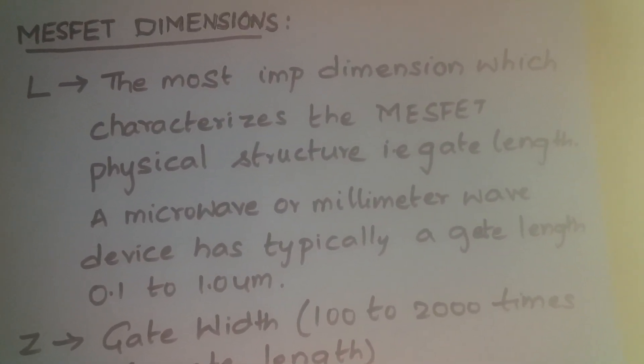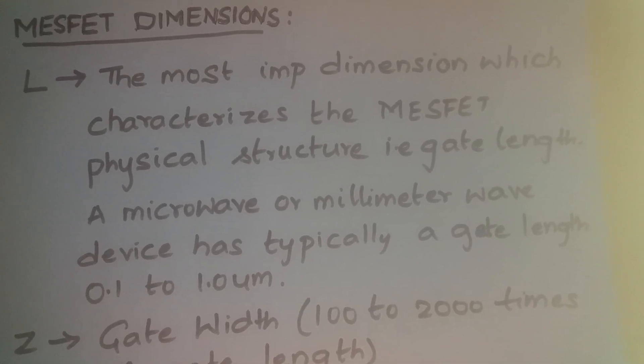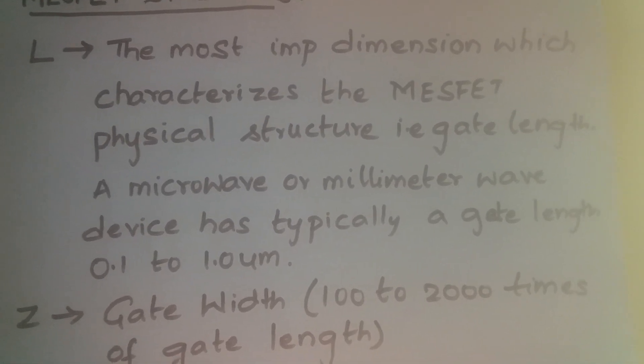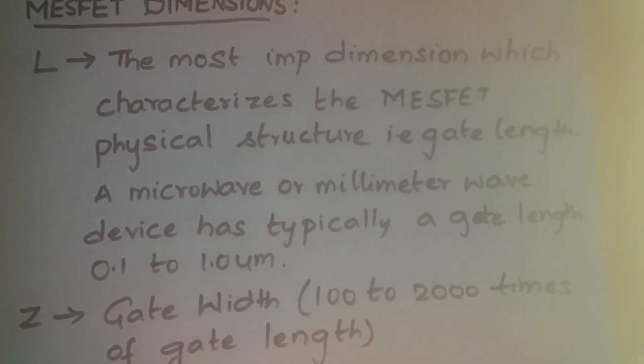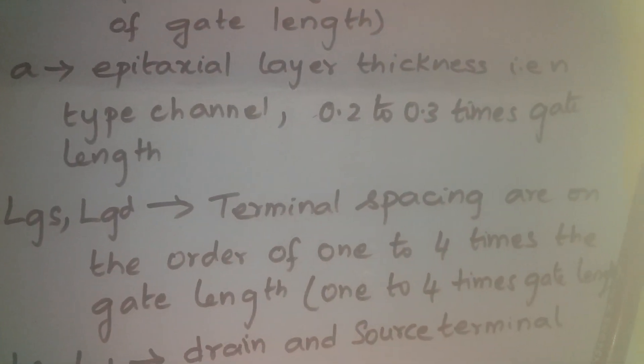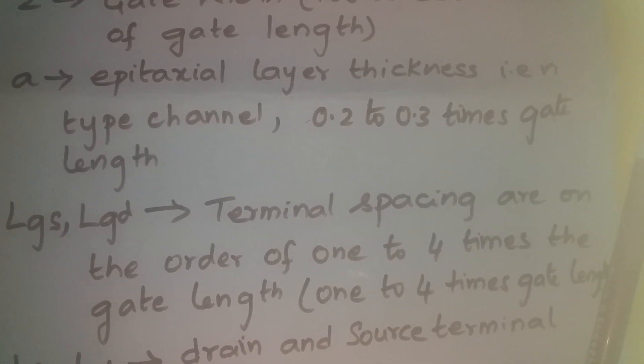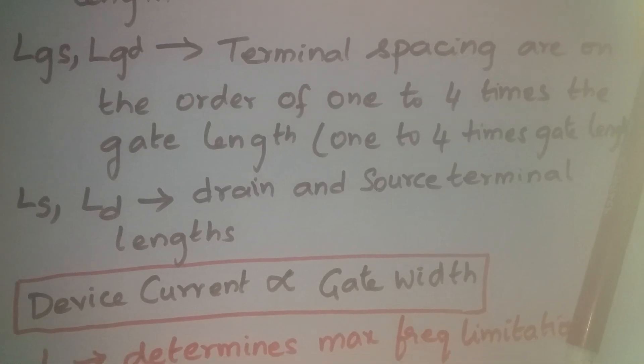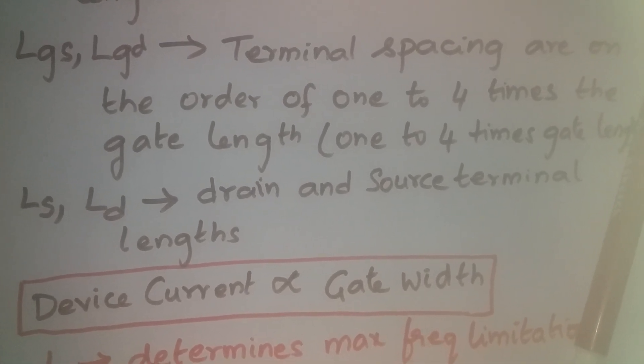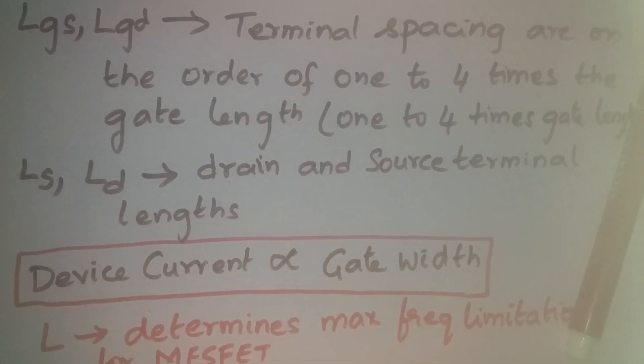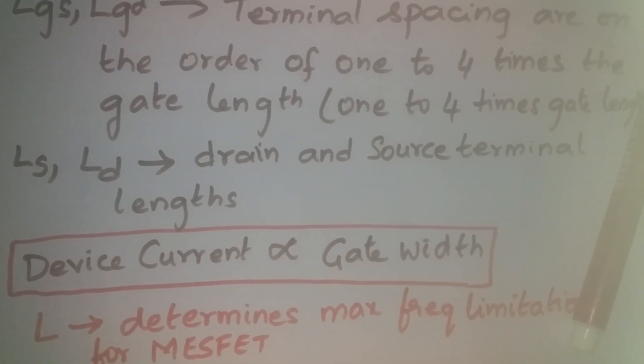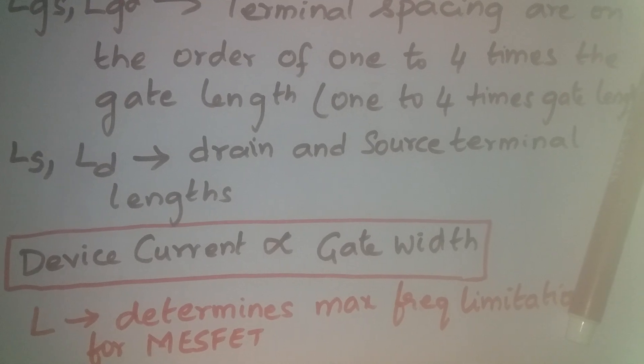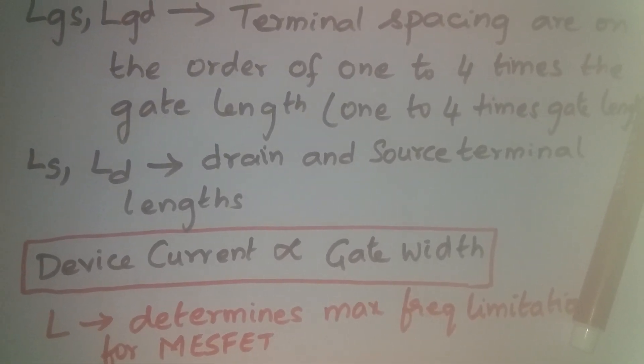So this is what we have discussed about MESFET dimension. L is the gate length of the order of 0.1 to 1 micrometer. Z gate width is of the order of 100 to 2000 times of gate length. A, epitaxial layer thickness is about 0.2 to 0.3 times gate length. LGS, LGD are of the order of 1 to 4 times of gate length. And LS, LD are drain and source terminal lengths. Device current is directly proportional to gate width. L, the gate length determines the maximum frequency limitation for MESFET.